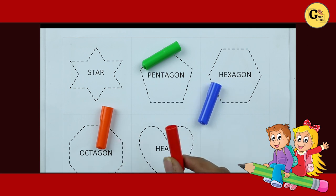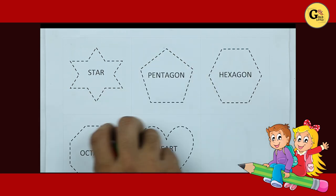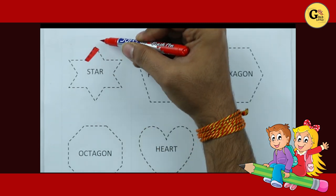Blue color, orange color, red color, green color. Let's start making star. It's a star.